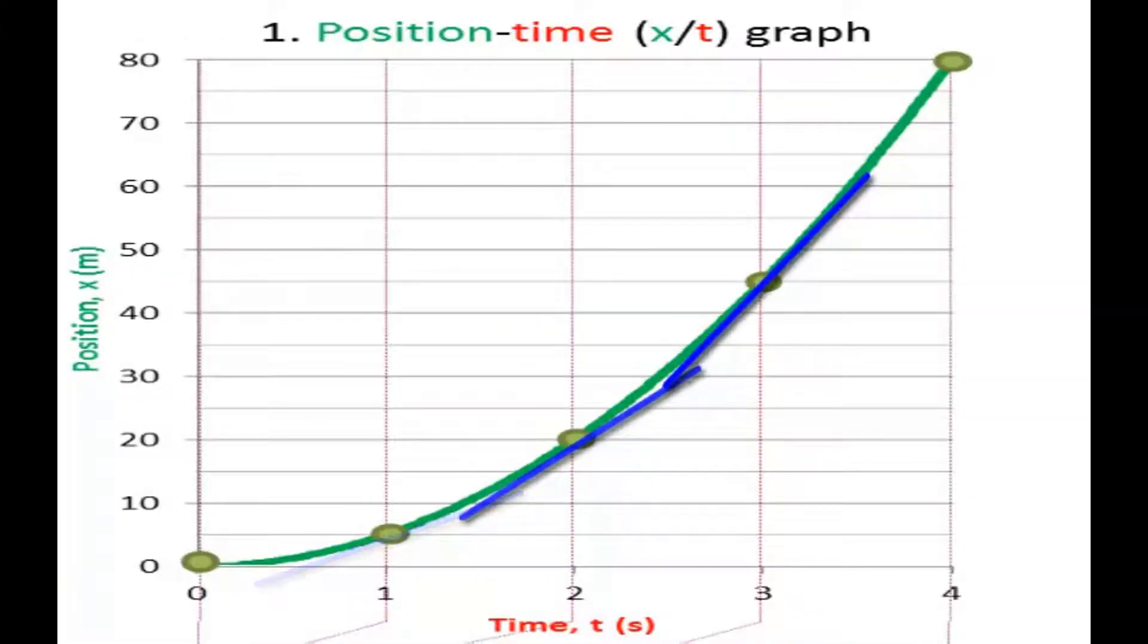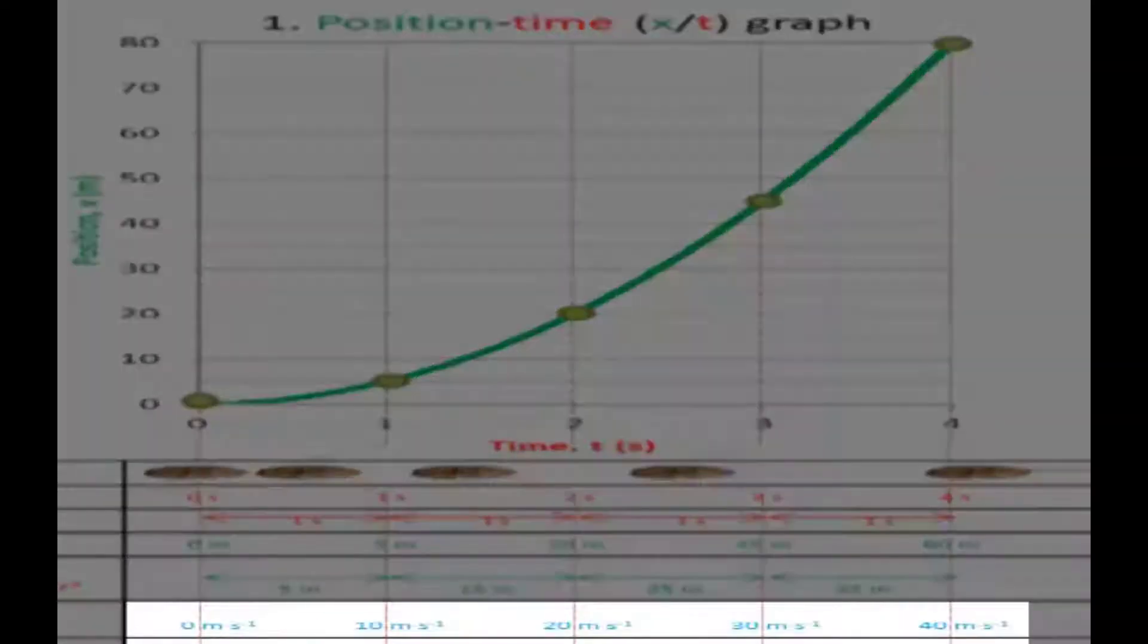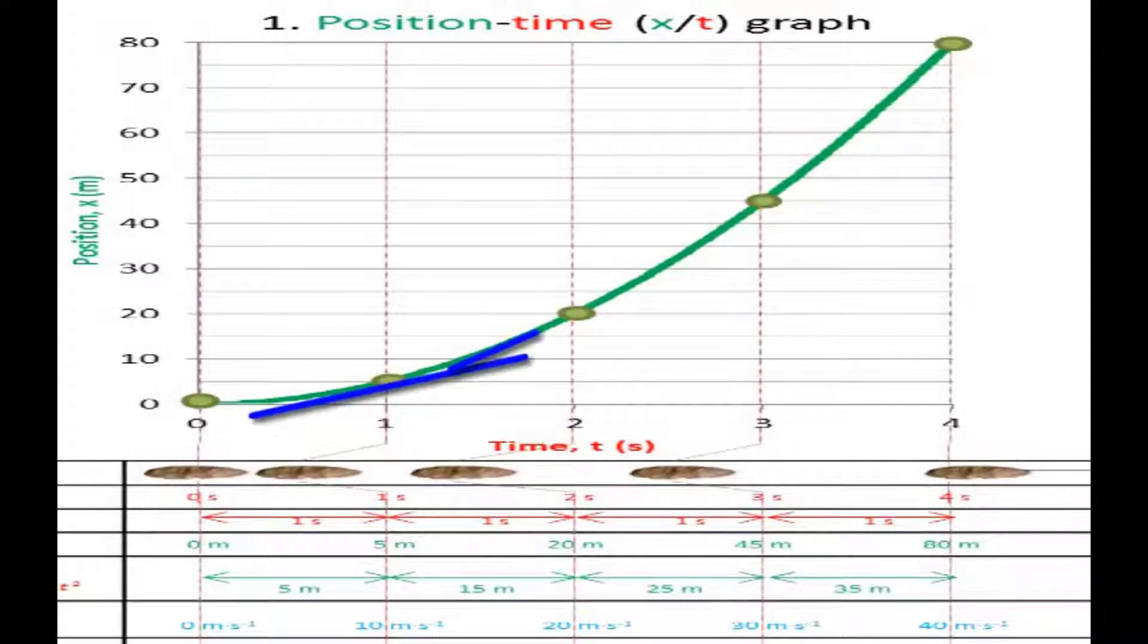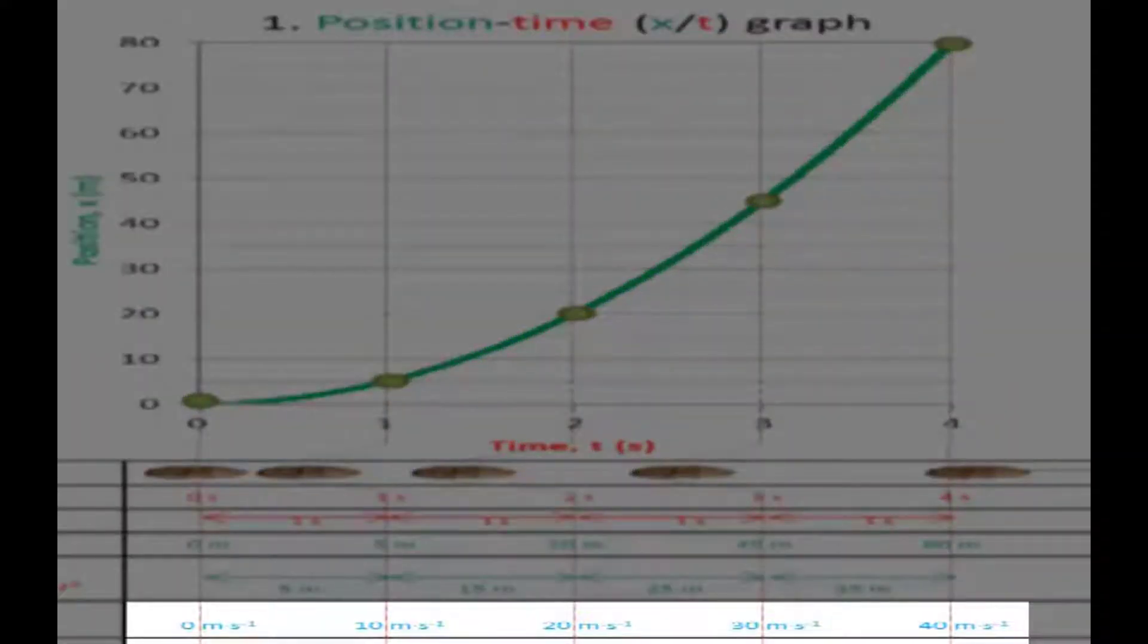The gradient is always changing because the velocity is always changing in accelerated motion. In this case, the gradient is becoming steeper and steeper because the velocity is increasing as time passes.